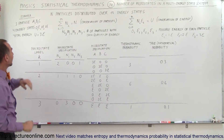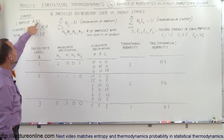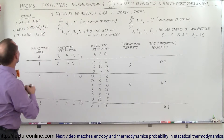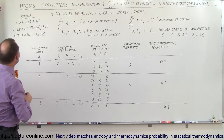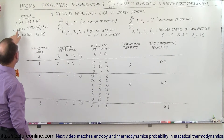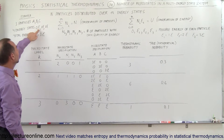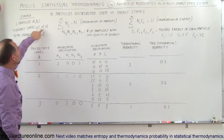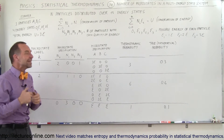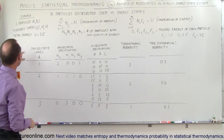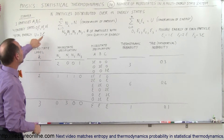So let's say we have three particles: A, B, and C, and four energy states: 0, E, 2E, and 3E — integer multiples of E. The total energy is constrained to be U equals 3E. That's the total energy of the system.